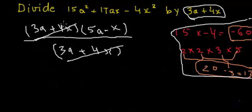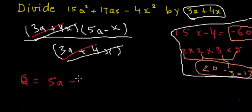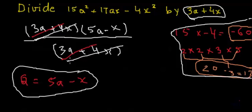So this makes our division very easy. We can factorize both the divisor and dividend, cancel out the common factors, and get the result. In this case the divisor was simple with variable indices of only one, so we didn't need to factorize it. The (3a plus 4x) cancels, and the quotient is 5a minus x. I would suggest you practice the factorization of algebraic expressions more — that is going to help you throughout in mathematics.